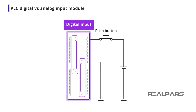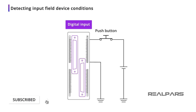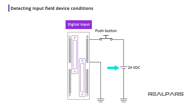As we said earlier, a digital input module will detect one of the two possible conditions of an input device — open or closed. So, the question is, how does the input module know if the input device is open or closed? All we need to do is construct a closed circuit containing the input device, the PLC input module, and a 24 volt DC power supply.